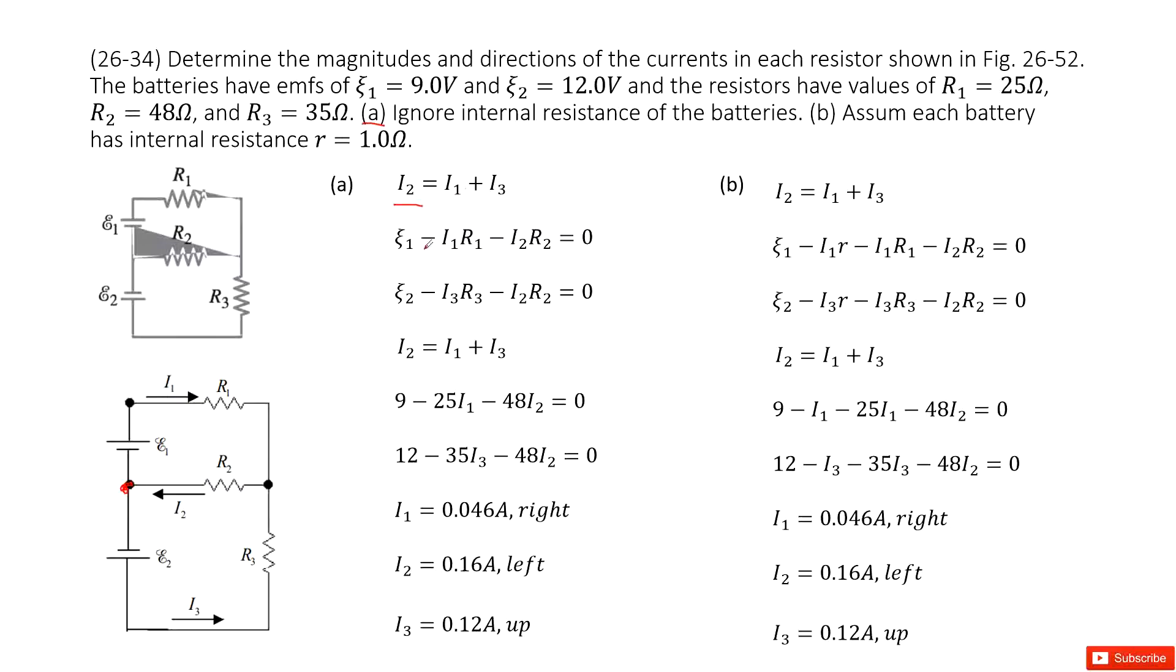And then we can draw the first loop. We go from the first battery, the current then goes through R1, then to R2. This is a clockwise loop. The battery increases the voltages, so we write epsilon 1, and then the current goes through resistor R1 making the voltage decrease. So minus I1 times R1, and then the current goes through R2,